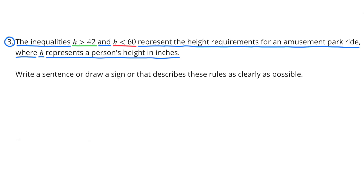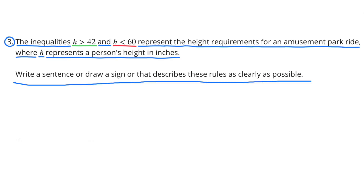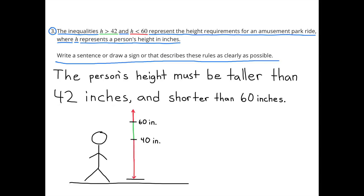Number 3. The inequalities H > 42 and H < 60 represent the height requirements for an amusement park ride, where H represents a person's height in inches. Write a sentence or draw a sign that describes these rules as clearly as possible. The person's height must be taller than 42 inches and shorter than 60 inches.